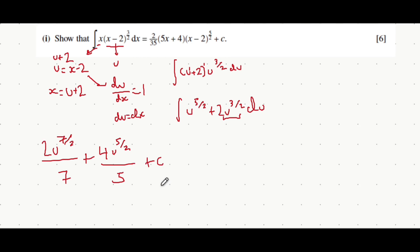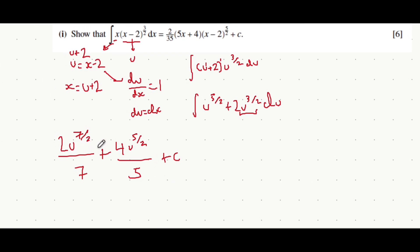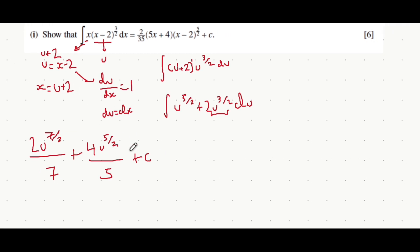We're almost there now. Once you've integrated, you want to replace u again with what you introduced it as before. So we replace it with x minus 2. We get it's equal to 2 multiplied by x minus 2 to the power of 7 over 2, all over 7, and you add on to that 4 multiplied by u again, which is x minus 2, all to the power of 5 over 2, all over 5, plus c.